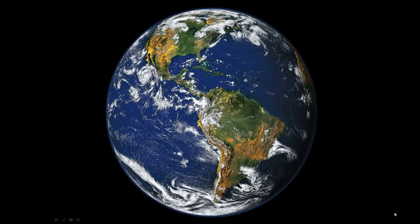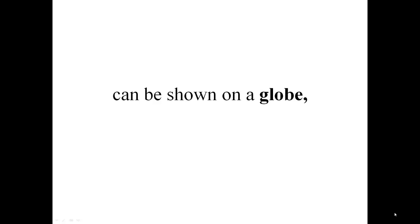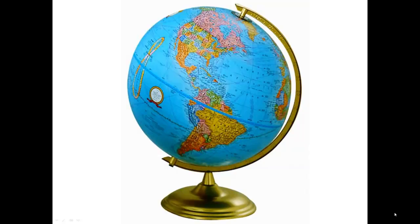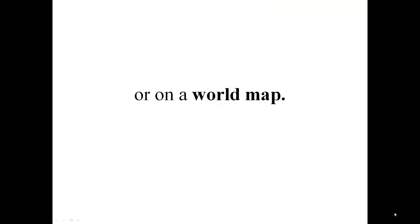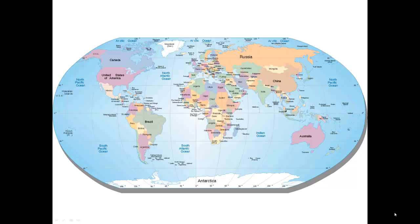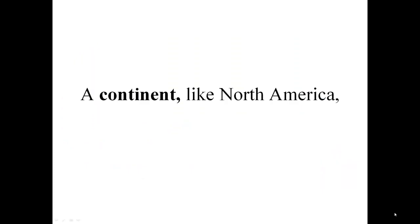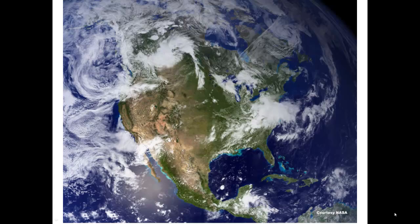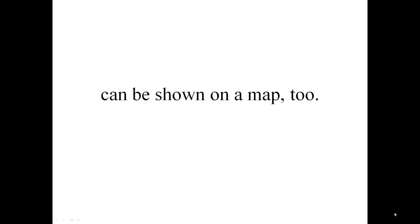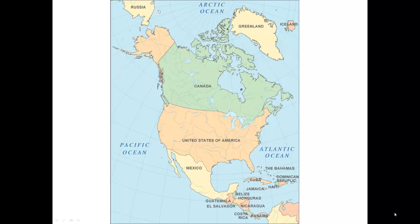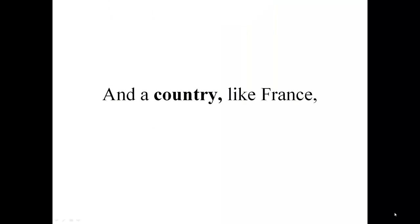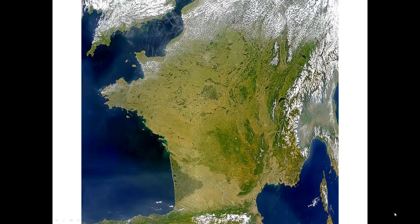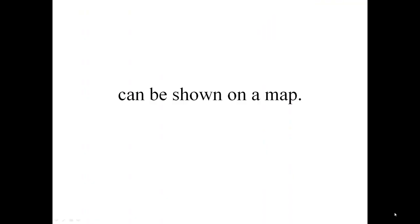Maps. The earth can be shown on a globe or on a world map. A continent like North America can be shown on a map too. And a country like France can be shown on a map.